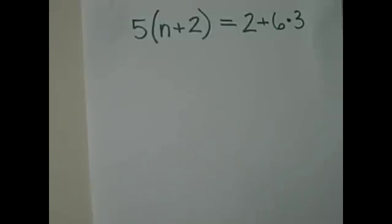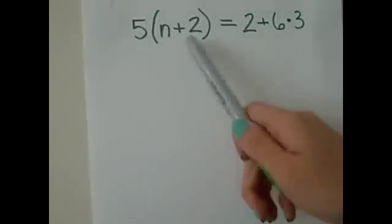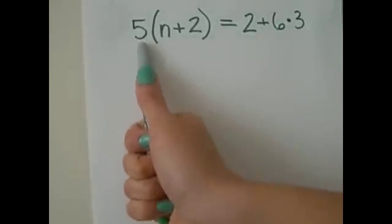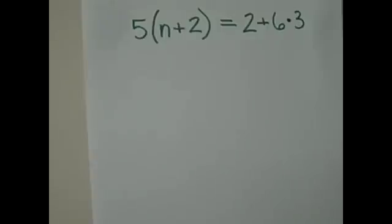So, what are we going to do first? Well, we're going to look at the problem and look for certain things. Like, here we have parentheses, and usually we have to do parentheses first. So, we're going to distribute this 5 here into these numbers. How do we do that?